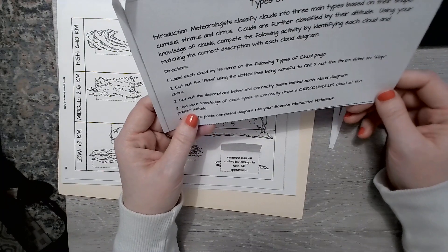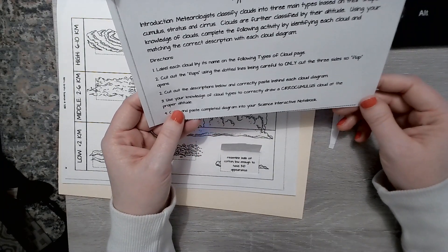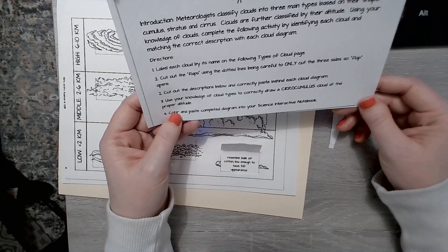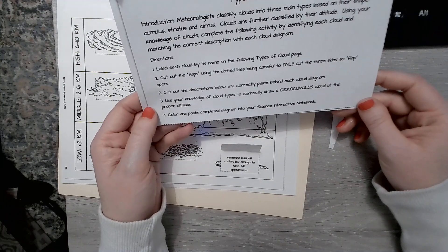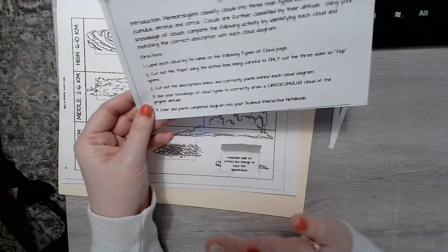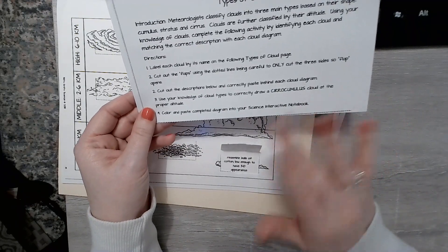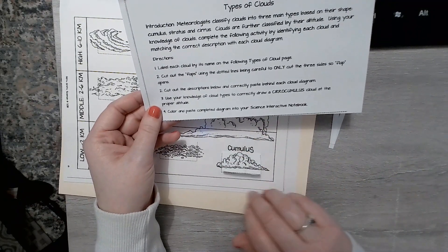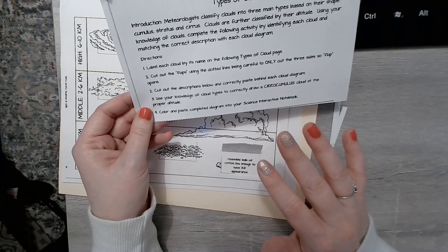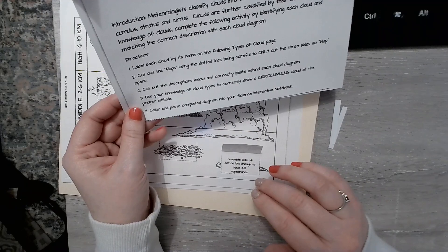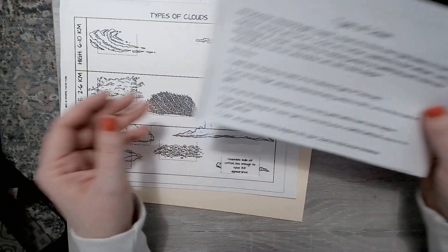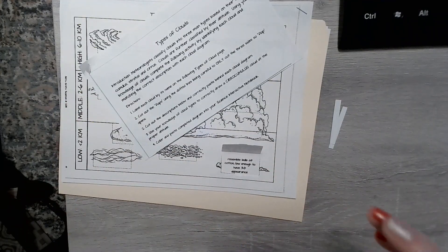So that use your knowledge of clouds to draw a serocumulus cloud at the proper altitude. So you will have learned about what a serous cloud is. We now know what a cumulus cloud is. So you have to kind of figure out where you would find those and then color and paste the completed diagram, not into your science notebook, but just onto a piece of construction paper.